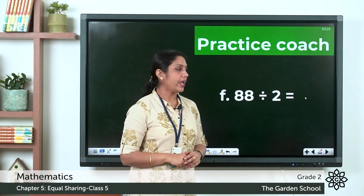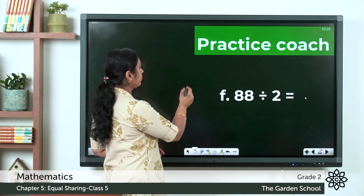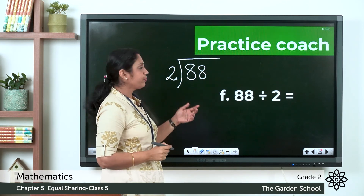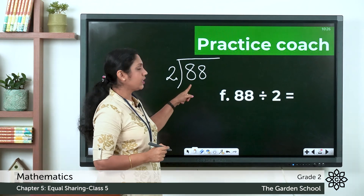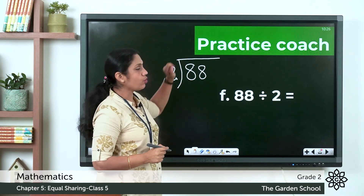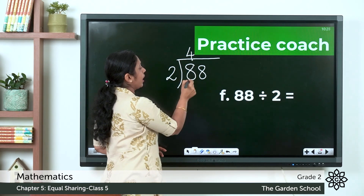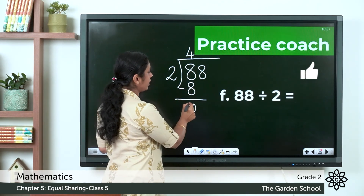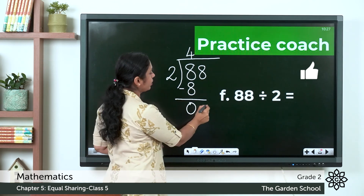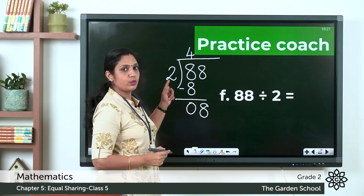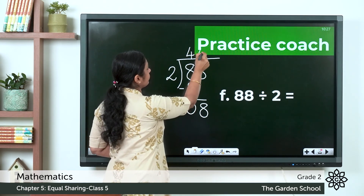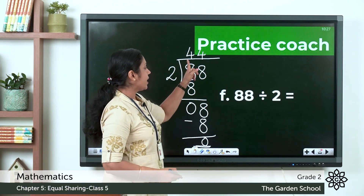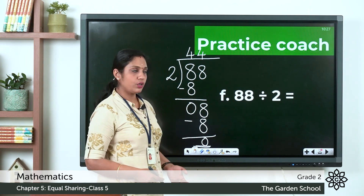Problem F: 88 divided by 2. The dividend is 88 and the divisor is 2. Take the tens digit 8 — 2 fours are 8, so write 4 on top and 8 under the tens place. Subtract: 8 minus 8 equals 0. Bring the ones digit 8 down. Divide 8 by 2 — the answer is 4. Subtract: 8 minus 8 equals 0. The answer is 88 divided by 2 equals 44.